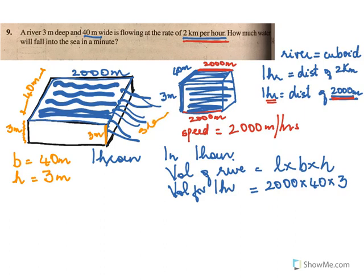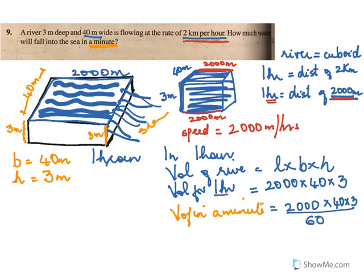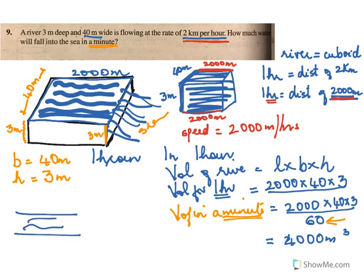The question asks how much water flows in a minute. So the volume per minute equals 2,000 × 40 × 3 divided by 60, which gives 4,000 cubic meters. Therefore, for every 1 minute, 4,000 cubic meters of water falls into the sea from the river.